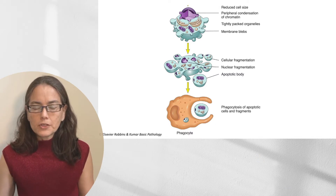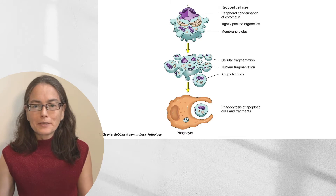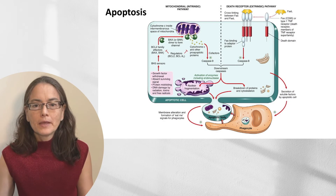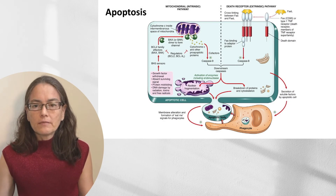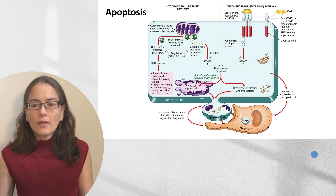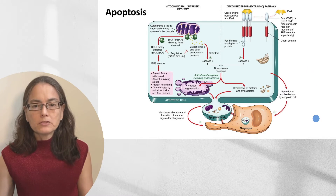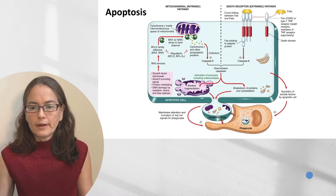The next image looks a little overwhelming, but we're going to walk through it slowly. This is the image from Robbins 11th edition that we're going to work through to understand the pathways of apoptosis.